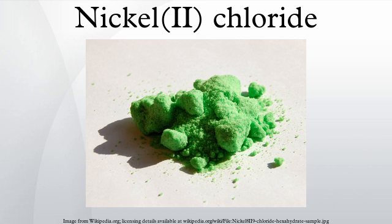Structure of NiCl₂ and its hydrates: NiCl₂ adopts the CdCl₂ structure. In this motif, each Ni²⁺ center is coordinated to six chloride centers, and each chloride is bonded to three Ni²⁺ centers. In NiCl₂, the Ni-Cl bonds have ionic character. Yellow NiBr₂ and black NiI₂ adopt similar structures, but with a different packing of the halides, adopting the CdI₂ motif.